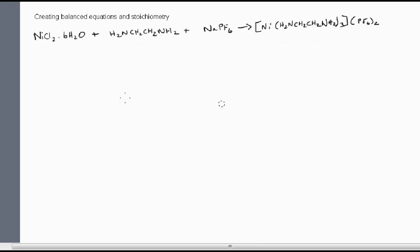In this video, we're going to start looking at how we create balanced equations and then have a little understanding about stoichiometry. The reaction we're going to look at is the reaction of nickel chloride, which comes as the hexahydrate, with ethylene diamine, and then it reacts with something else to give us some product.